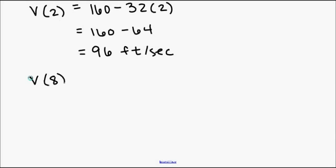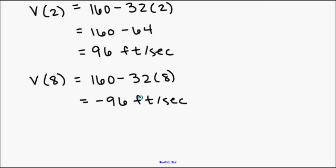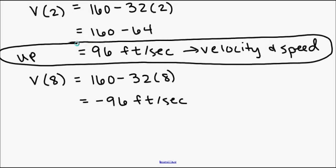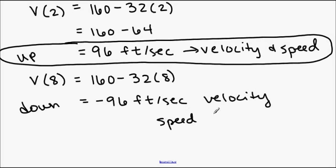And I get 160 minus 64, which is 96 feet per second. And then I'm going to plug in the 8 for this. And we get negative 96 feet per second. So on the way up, the rock is moving at 96 feet per second. That is its velocity. This is also its speed. It is speed because it is a positive number. And remember, speed is absolute value of velocity. In this case, that would be the same number. On the way down, you're moving the opposite direction, so your sign has changed. So this is the velocity, negative 96 feet per second. But the speed would be the absolute value of that. That would be 96 feet per second.